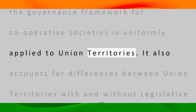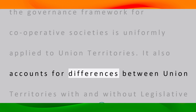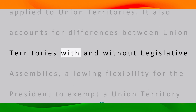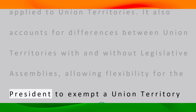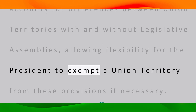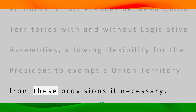In essence, Article 243ZS ensures that the governance framework for cooperative societies is uniformly applied to union territories. It also accounts for differences between union territories with and without legislative assemblies, allowing flexibility for the President to exempt a union territory from these provisions if necessary.